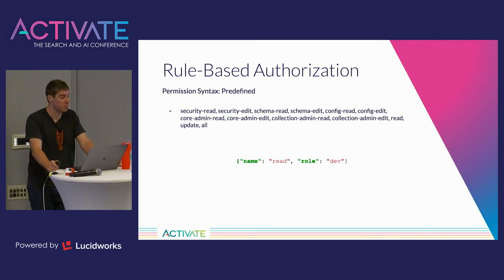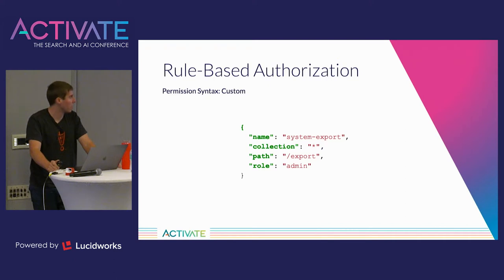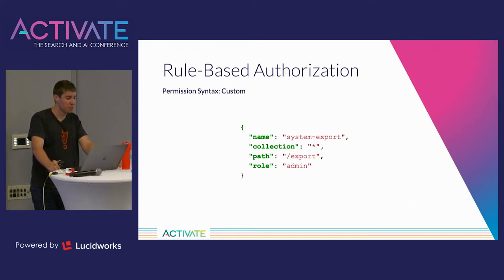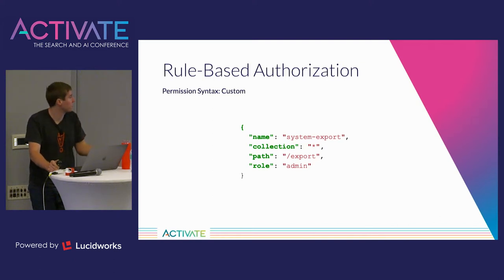For example, people will sometimes create a permission with the name 'read' and then give it a path or collection attribute, and Solr doesn't handle that well. A predefined permission typically just has a name attribute and the roles it applies to. Custom permissions in rule-based authorization are really powerful — you can define them based on collections, request handlers, params, or the HTTP verb like GET versus POST. Here's an example: a custom permission that applies to all collections using a wildcard, preventing most users from running the export handler so only admin users can do that.